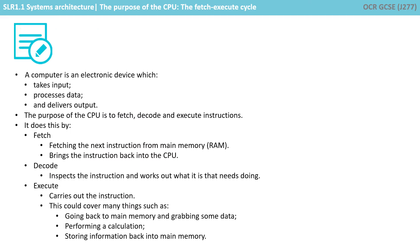So let's just recap what we've learned in this video. A computer is an electronic device which takes input, processes data and delivers output. The purpose of the CPU is to fetch, decode and execute instructions. It does this by fetching the instruction from the main memory and bringing it back to the CPU. It then inspects the instruction and works out what needs to be done. It then carries out the instruction, which could involve many different activities.